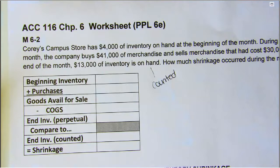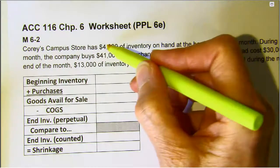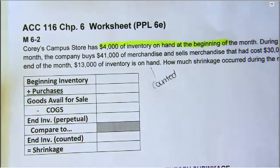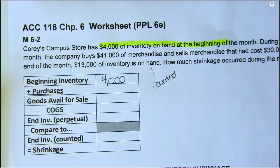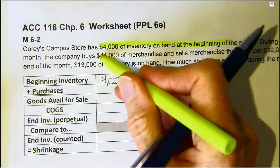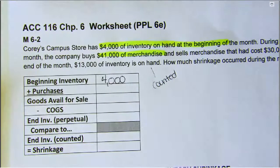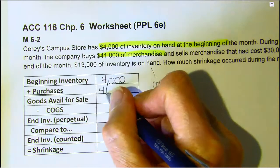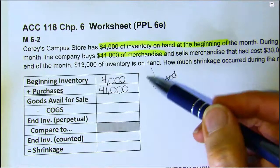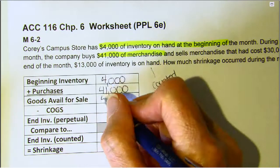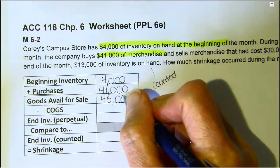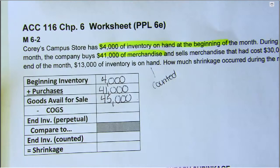Let's isolate the important information here. Cory's Campus Store had $4,000 of inventory on hand at the beginning of the period. That $4,000 beginning inventory would go right there. During the month the company buys $41,000 of merchandise — that would be considered our purchases. The goods that we had available to sell would be $4,000 plus $41,000, or $45,000 of goods available for Cory's Campus Store to sell.